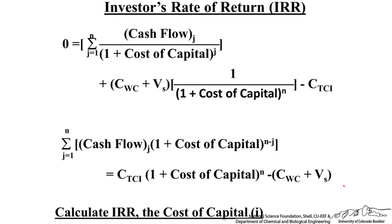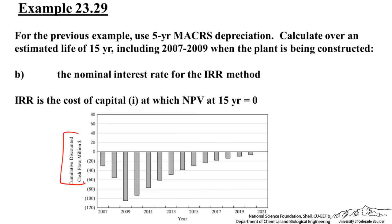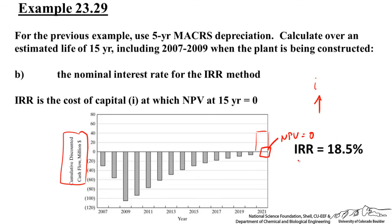To calculate IRR, set up a spreadsheet in Excel: calculate the net present value, set it equal to zero, and the variable you're changing is the cost of capital. Use Solver or Goal Seek in Excel. For our example, we increase the interest rate I until the cumulative discounted cash flow reaches zero at the end of the venture, and we get an internal rate of return of about 18.5% — the equivalent interest rate that investors in this project will earn.